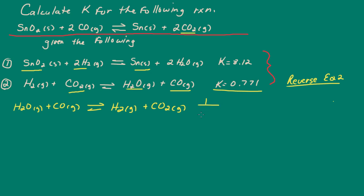Now, because I reversed number 2, remember when you reverse, K for the reverse reaction is the reciprocal. So now I would have 1 over K. So that would be 1 divided by 0.771.